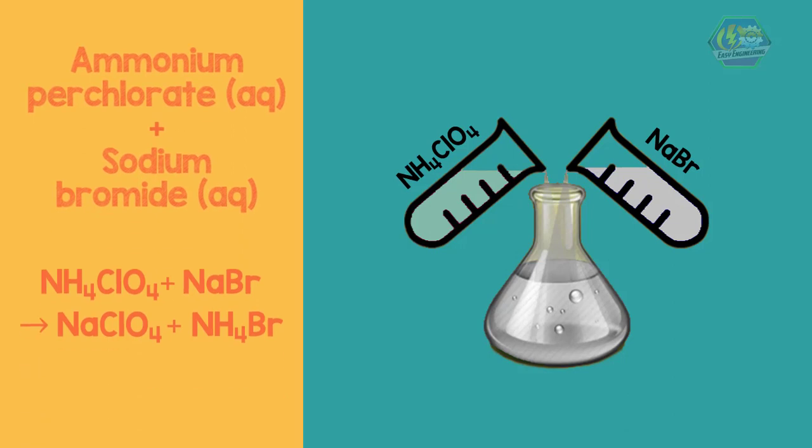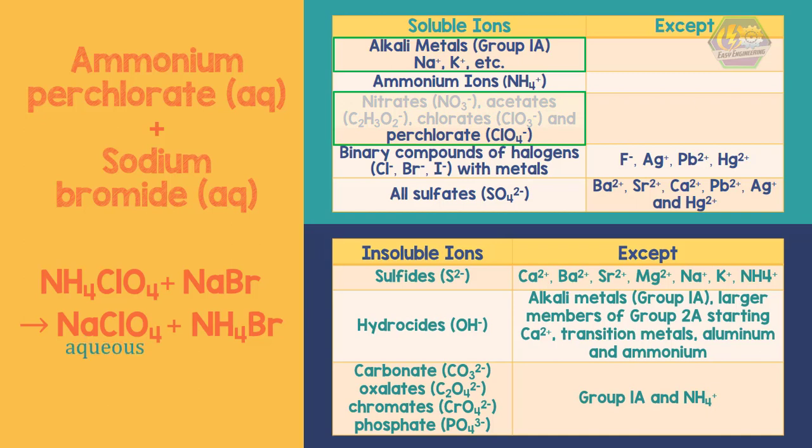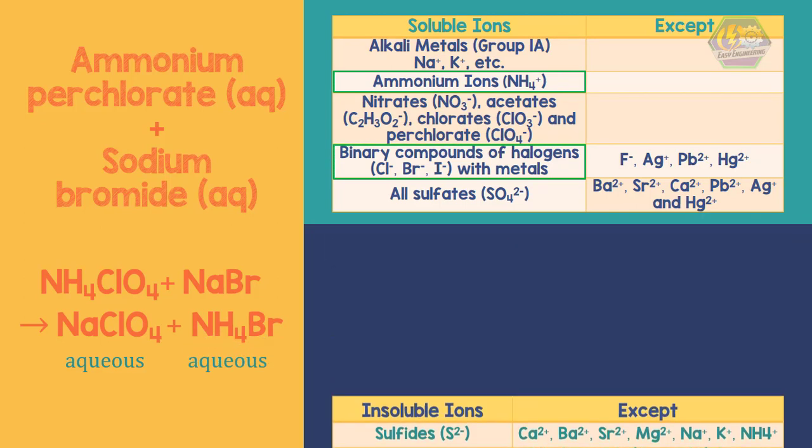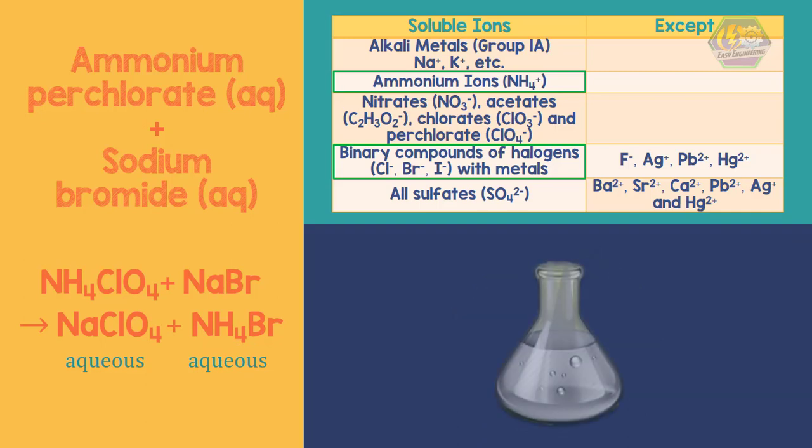We have to determine their state. From the table, alkali metals group 1A and perchlorate combinations are soluble. Hence, this is aqueous. While ammonium and bromide combination also are soluble. Thus, this is aqueous. Therefore, there is no reaction that will happen if we mix the ammonium perchlorate and sodium bromide.